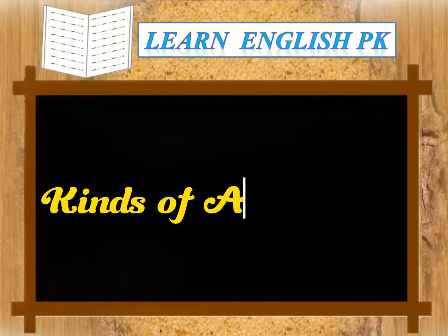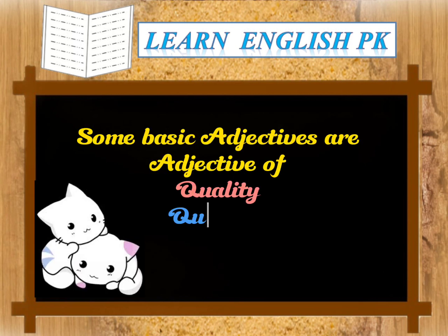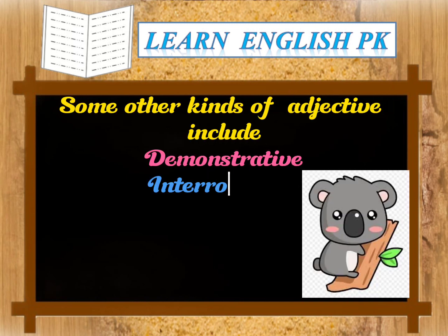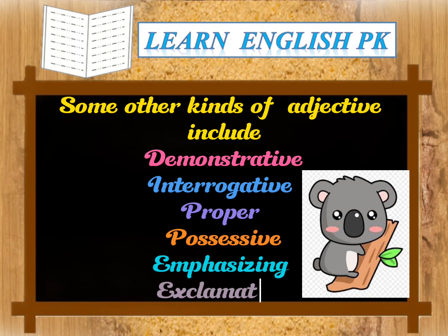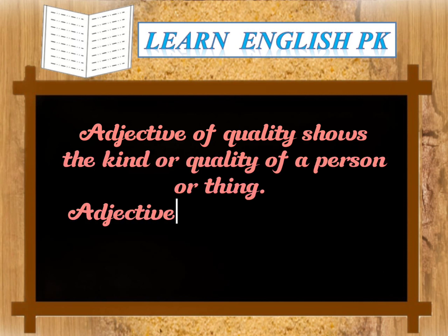Kinds of adjective: some basic adjectives are adjective of quality, quantity, and number. Some other kinds of adjective include demonstrative, interrogative, proper, possessive, emphasizing, and exclamatory. Adjective of quality shows the kind or quality of a person or thing.